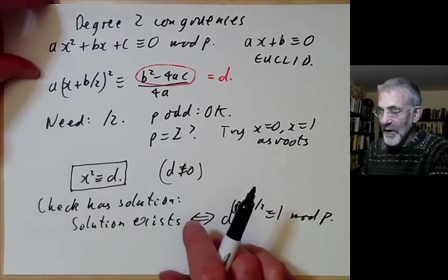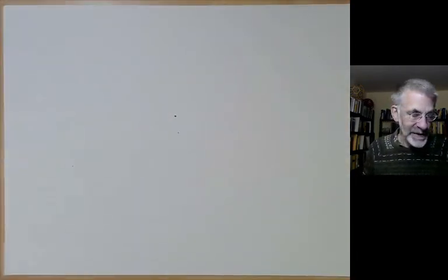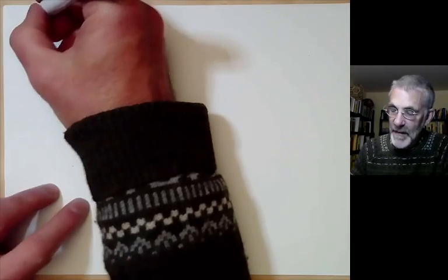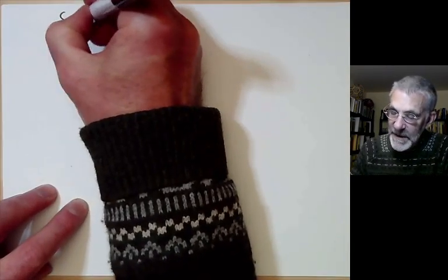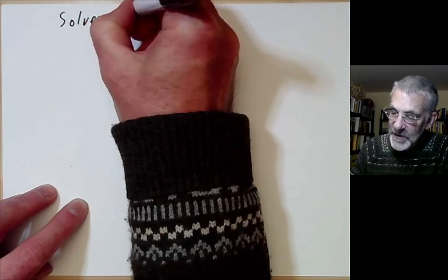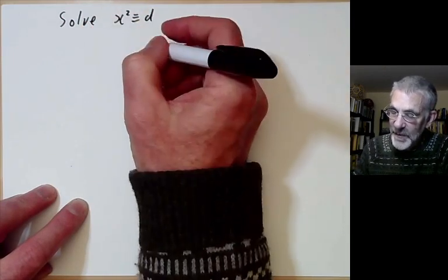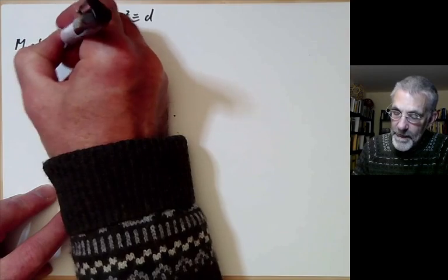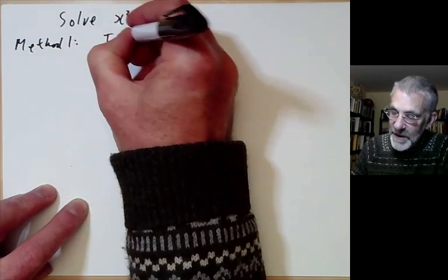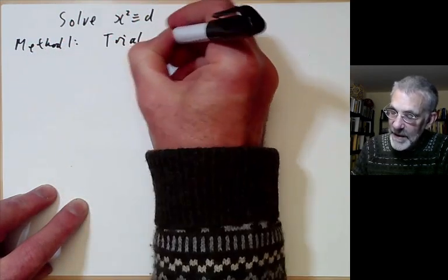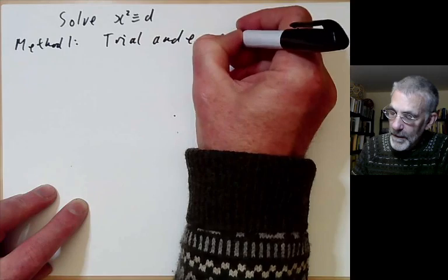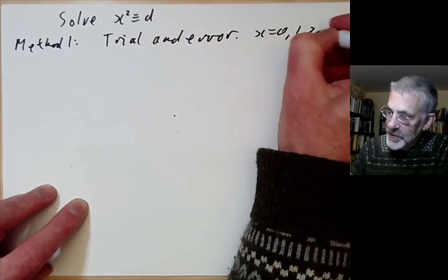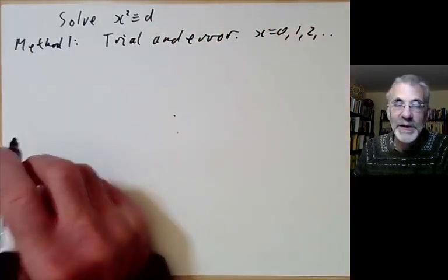Suppose we now know that a square root of d exists. How do we find it? The problem is to solve x² ≡ d mod p. Method 1 is trial and error — we just try x = 0, 1, 2, and so on until it works.